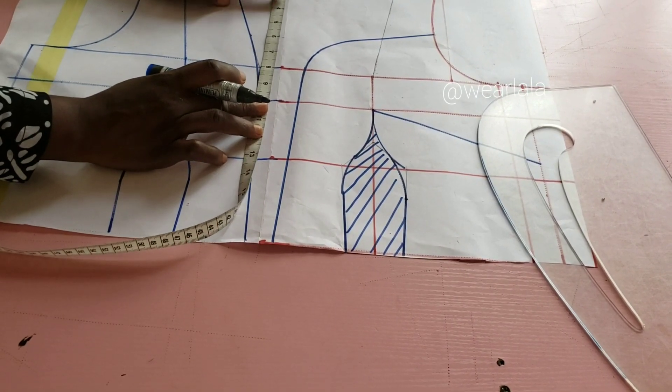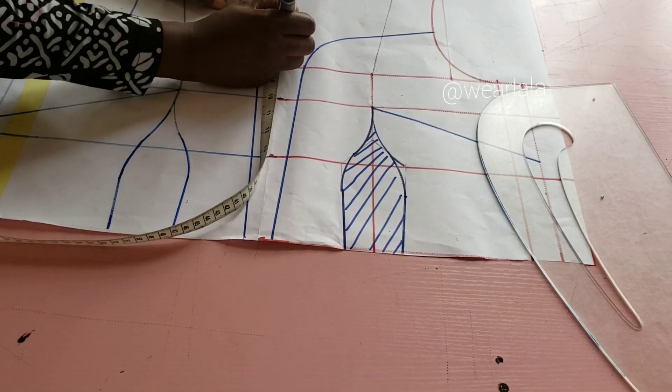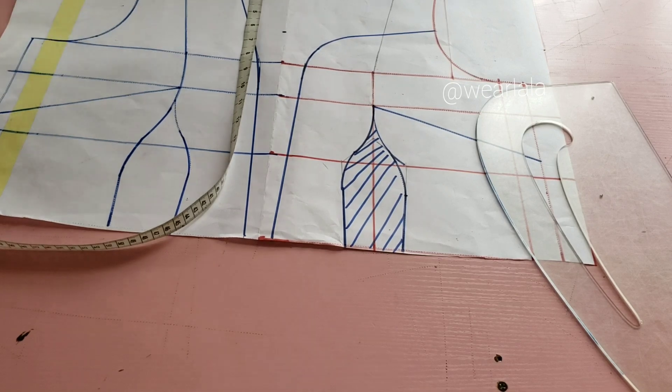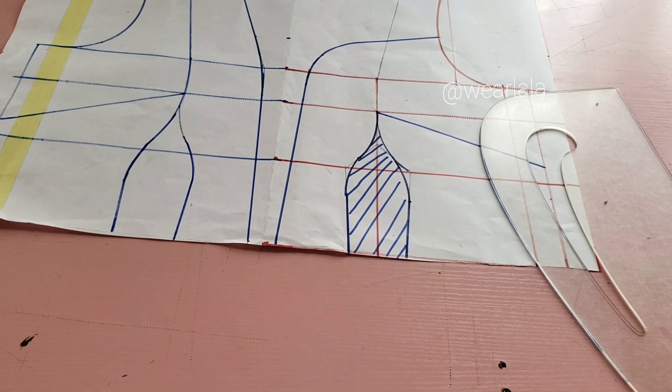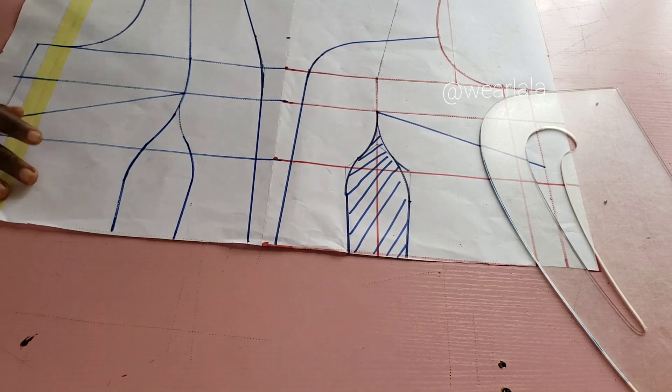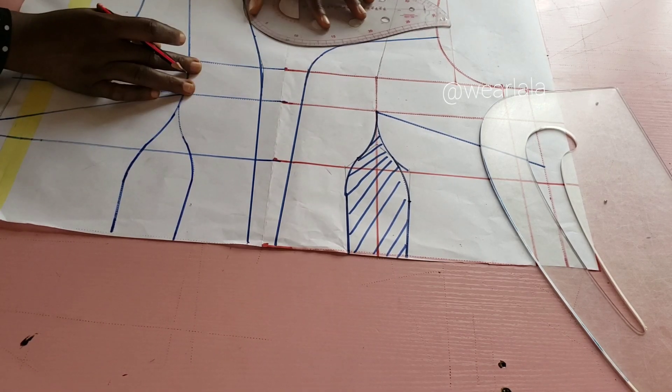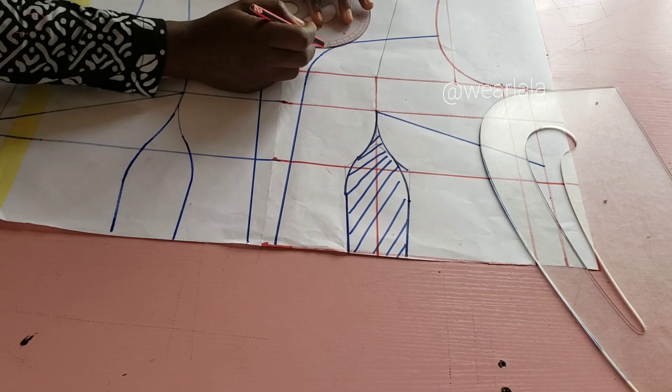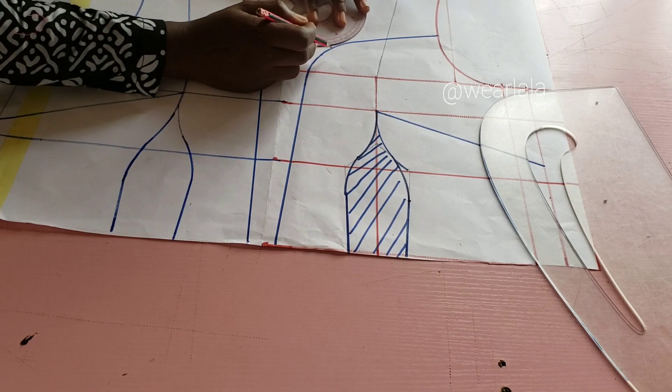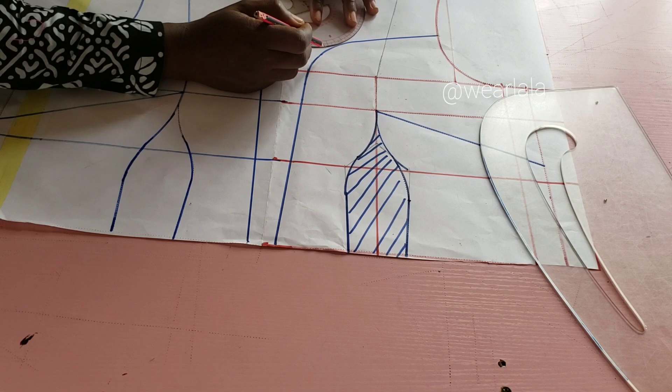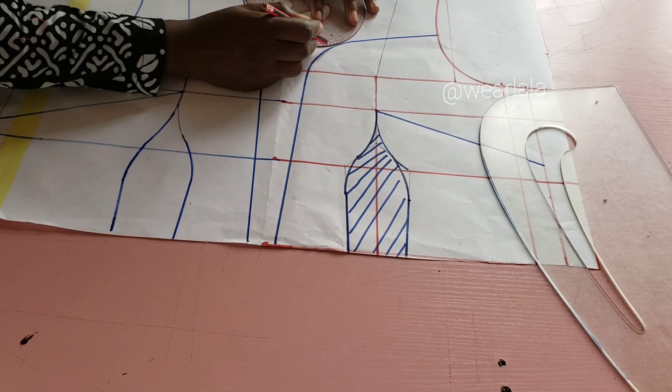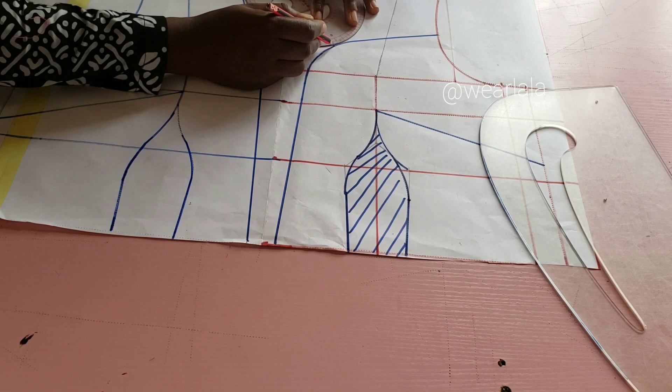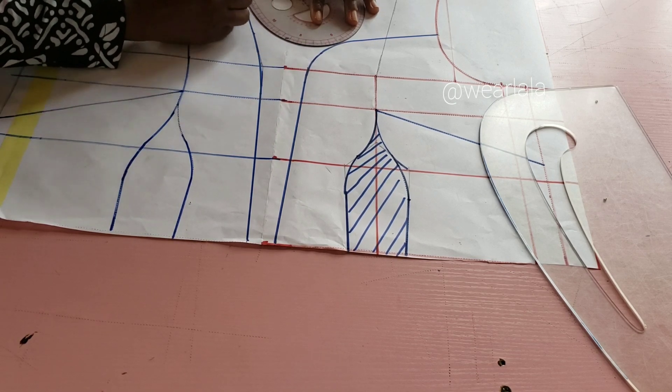While I was shooting I didn't even know that this part wasn't showing, but what I did was I came down six inches from the shoulder line. And now I want to create the style line for my insert. I want to create a style line for my insert like this.